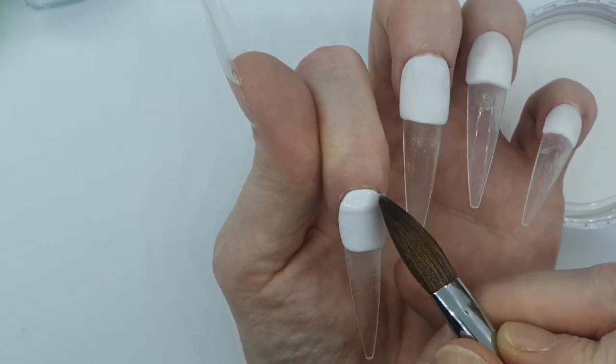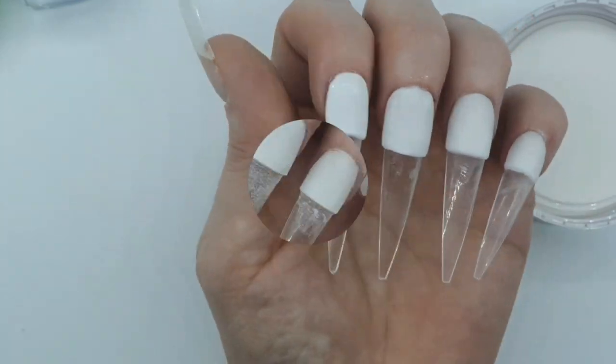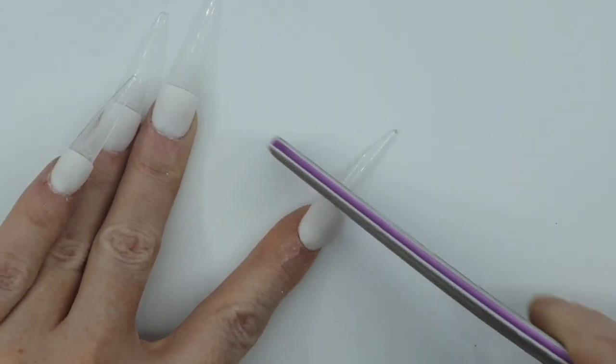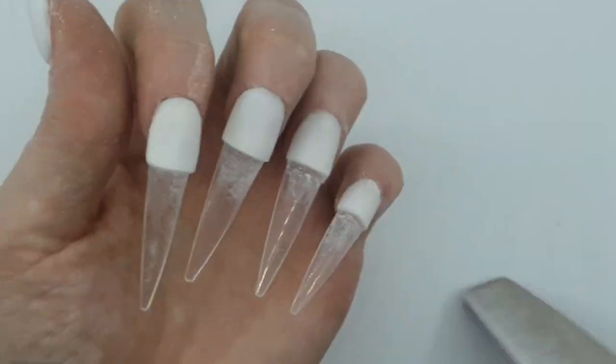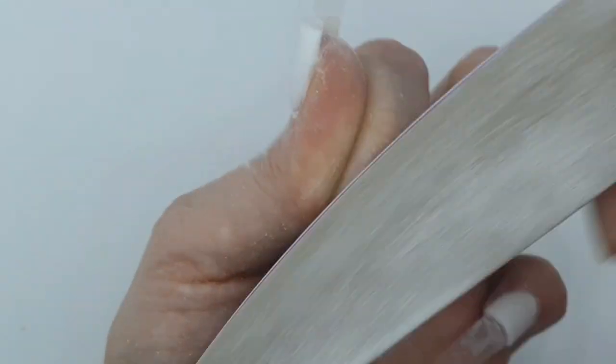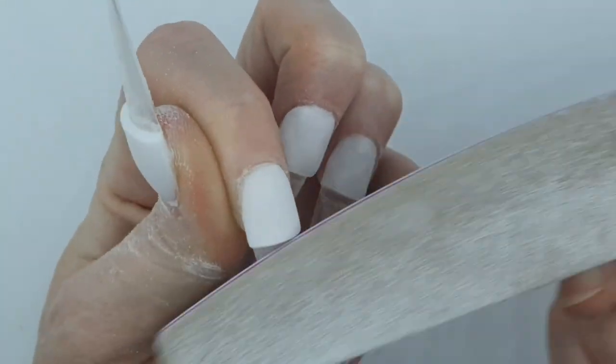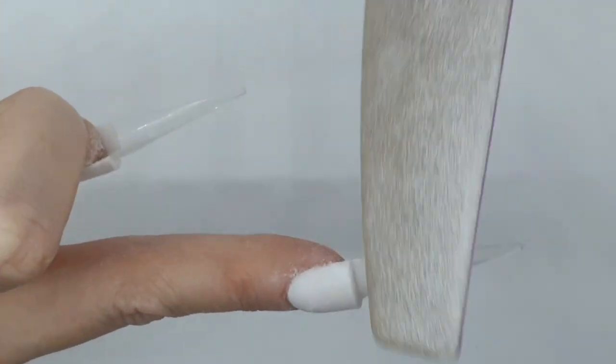I'm going to fill in that cuticle area because the first bead didn't go right. Now I'm just going to file the shape and go over the top. Do you find whenever you're color blocking, filing over the top and getting that part smooth helps a lot? Then I'm just going to file on top of the tip.